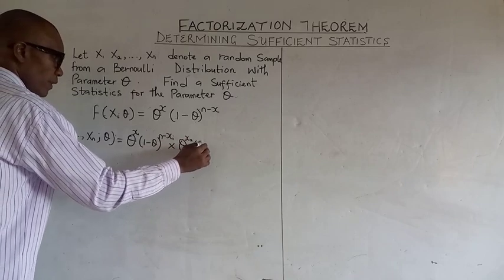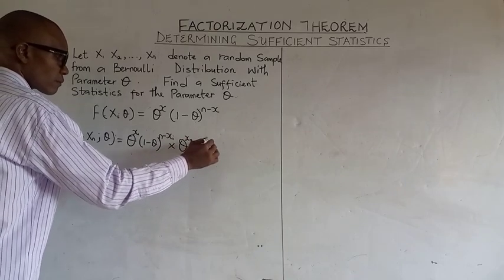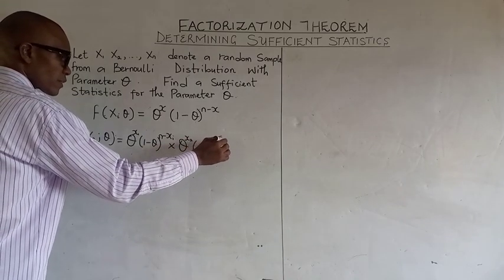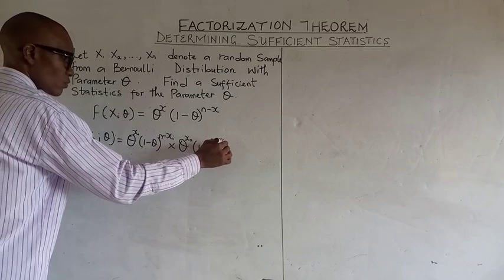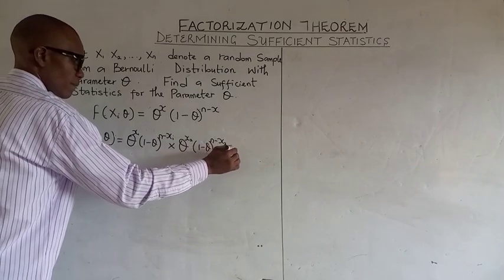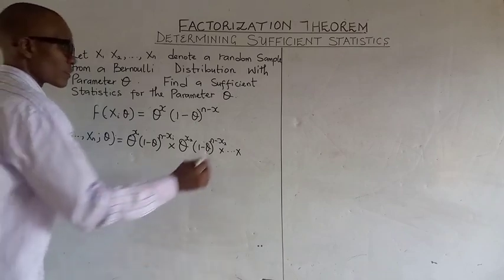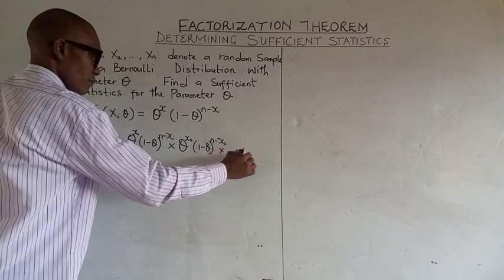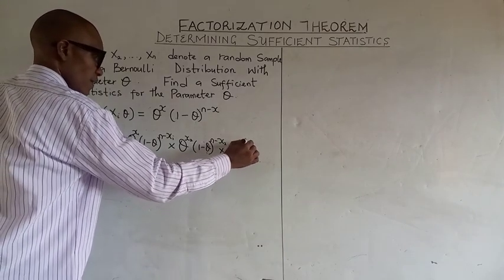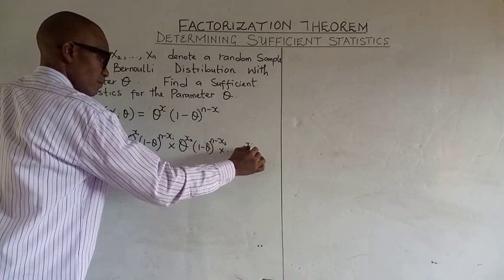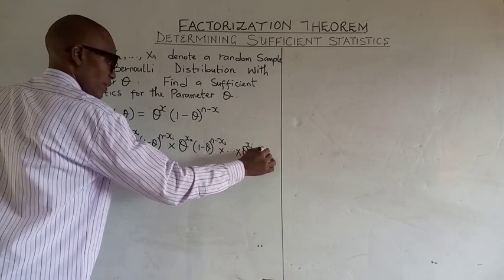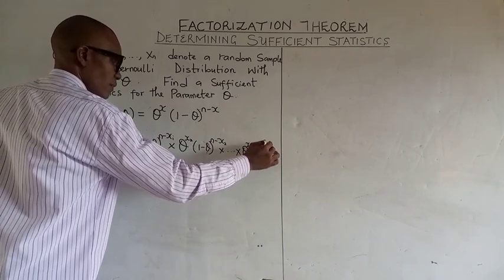(1 minus theta)^(n minus x2) multiplied by the continuous value to give theta^(xi's) (1 minus theta)^(n minus xi's).